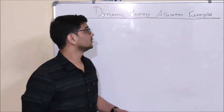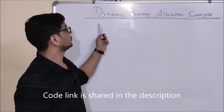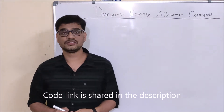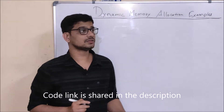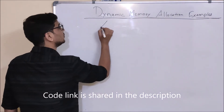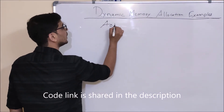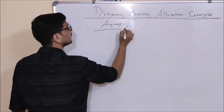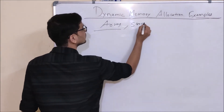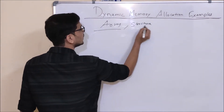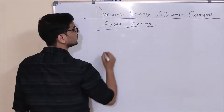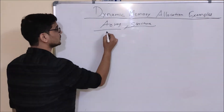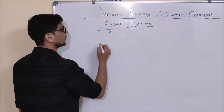Hello friends, in today's video we are going to see examples of dynamic memory allocation. I will give you an example of array and structure, and these are very important. So first of all, let's take an example of array.